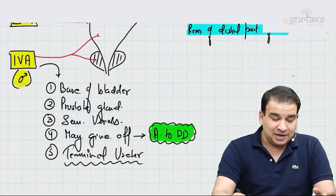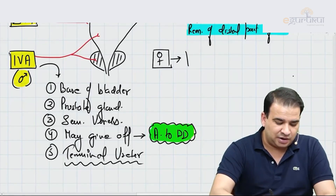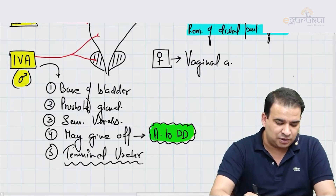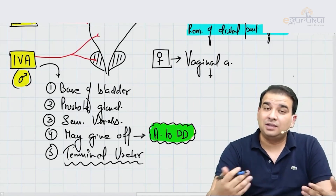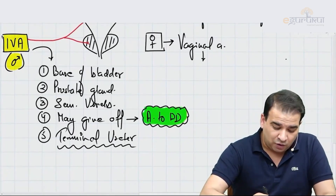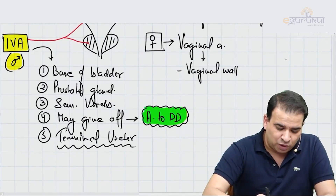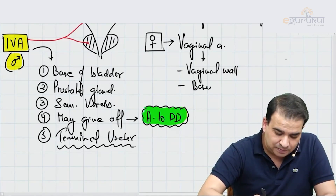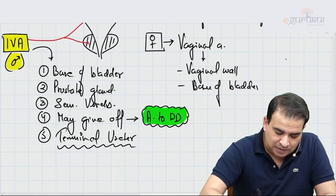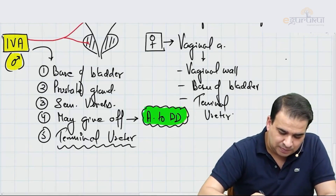In females, the vaginal artery replaces the inferior vesicular artery. Besides supplying the vaginal wall, the vaginal artery also supplies the base of the bladder and the terminal ureter — the same structures that would have been supplied by the inferior vesicular artery in males.